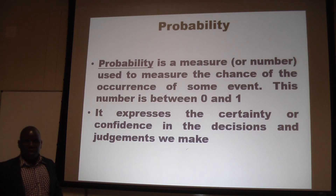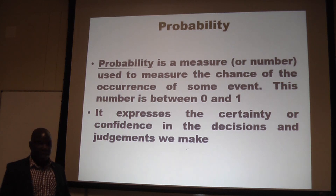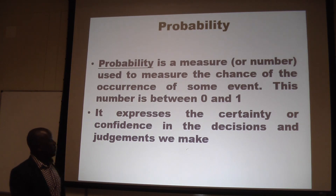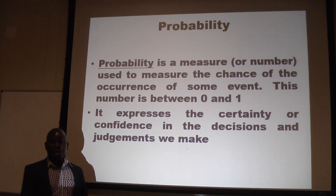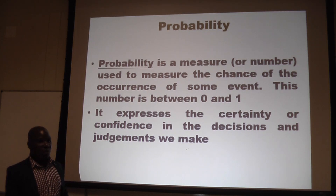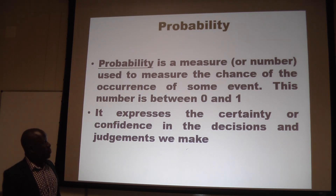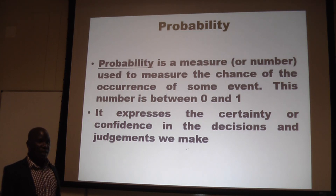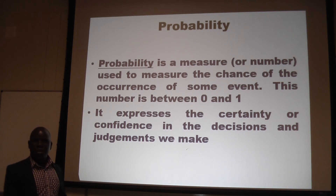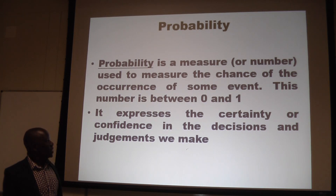If the probability of an event is zero, it means that is a rare event — in other words, that event will not happen. Whereas if the probability of an event is one, it means it's a sure event; no matter what, that event will happen. For example, the probability that the sun will rise on any given day in Namibia is almost one, whereas the probability of you meeting a donkey that can fly is a rare event — we call that probability zero.